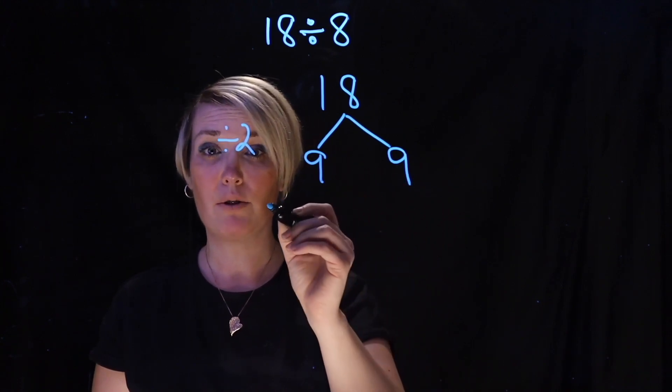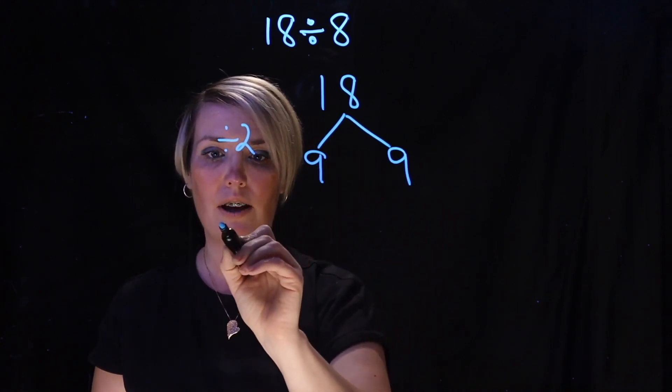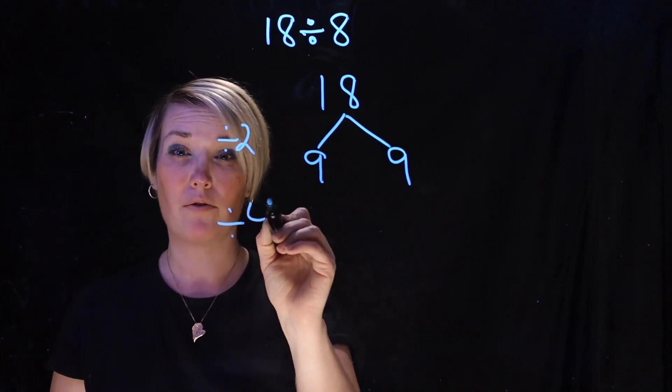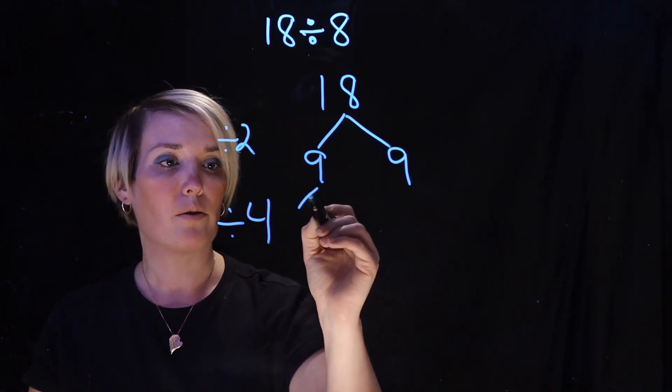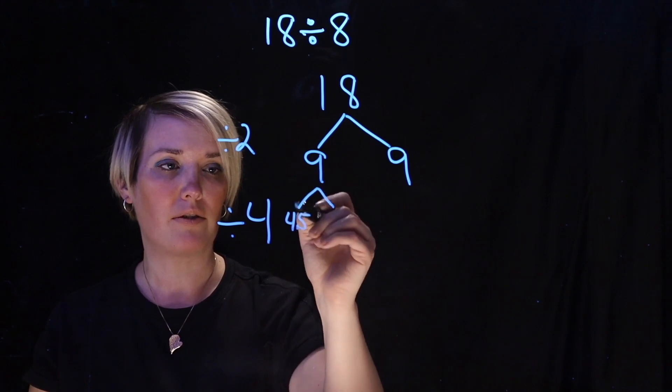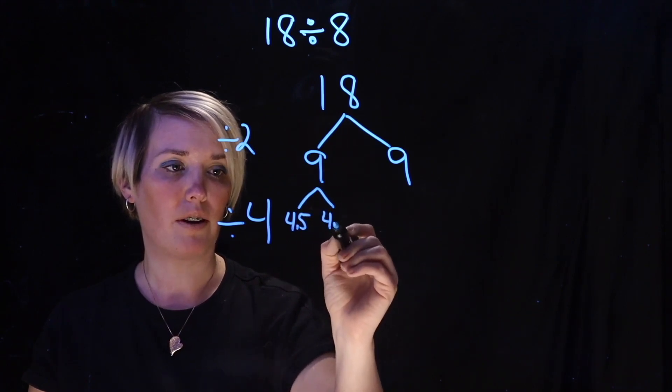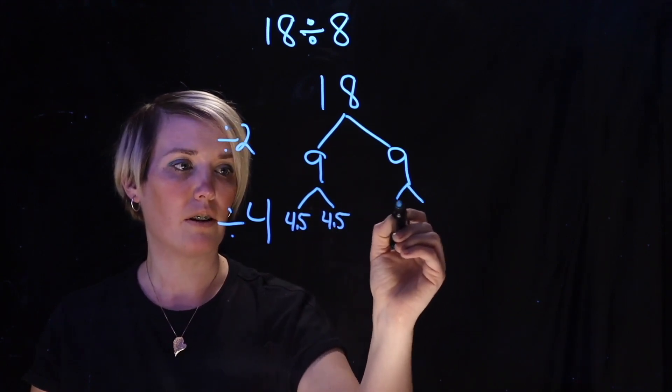And then what she did was she divided by 2 again. So that's really like dividing by 4. And what she got was she got 4.5. So 9 divided by 2 is 4.5. Same thing for this 9.